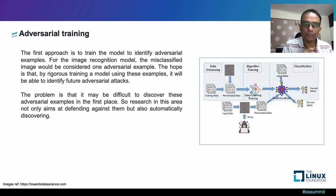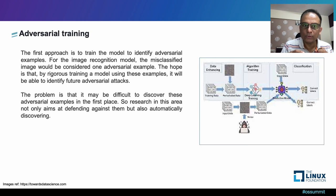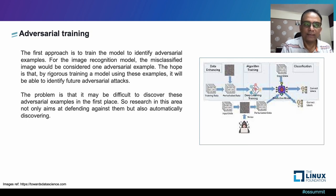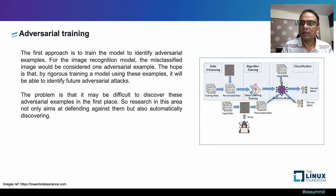Coming to adversarial training: the first approach is to train the model to identify adversarial examples, such as images loaded into a recognition model that classifies different segments. The hope is that by rigorous training the model effectively works on incoming threats and separates them. The problem is that discovering adversarial examples in the first place can be difficult, so research in this area aims not only at defending against them but also at automatically discovering them. There are many tools in the market for adversarial robustness, including one recently developed by IBM which is quite effective for adversarial training.